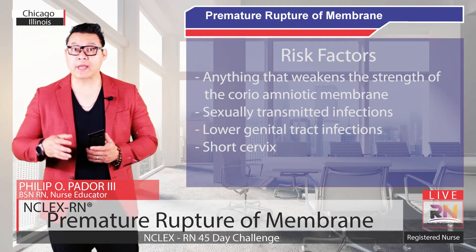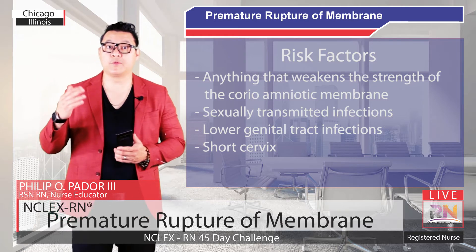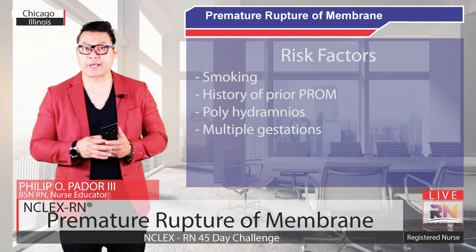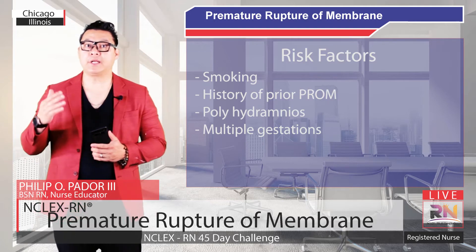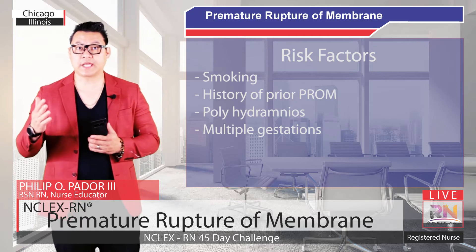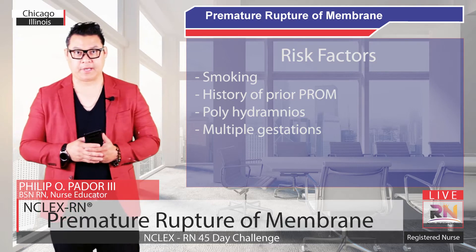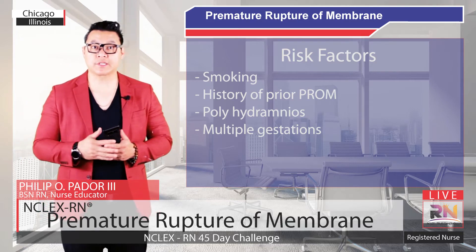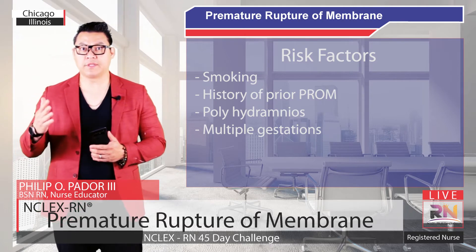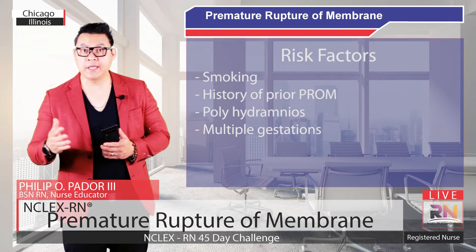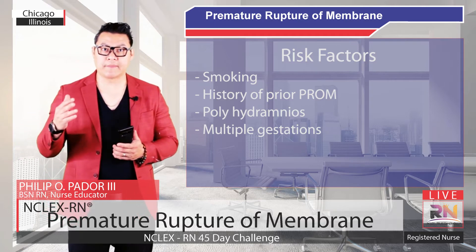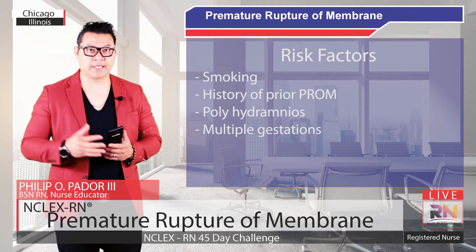The risk of PPROM is also doubled for women who smoke. Other risk factors include history of prior PPROM, polyhydramnios, and multiple gestations, which place increased stress on the chorio-amniotic membranes. Other risk factors are similar to those for preterm delivery, including a prior preterm delivery, bleeding in pregnancy, low socioeconomic status, and low body mass index.